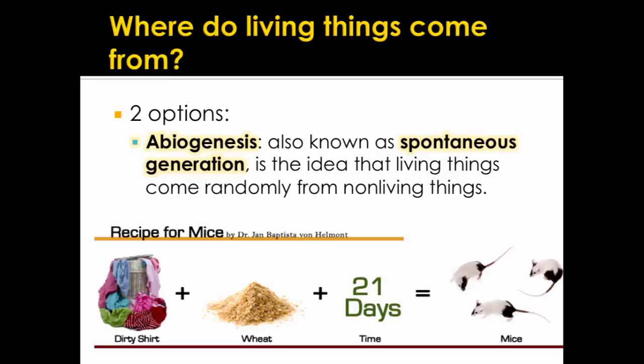So biogenesis means to make living things from living things, but abiogenesis means to make living things from non-living things. A long time ago, some people used to think that you could take a dirty shirt and wheat, leave it for 21 days, and make mice. Dirty shirts and wheat are not alive, however mice are, so that would be an example of abiogenesis.